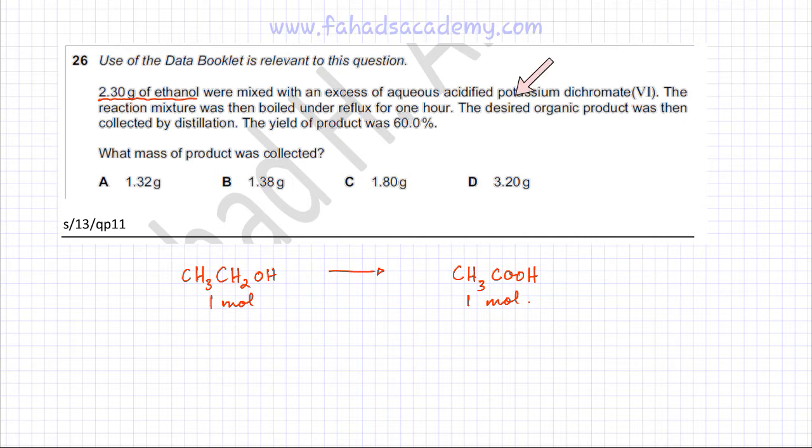Now, the desired organic product was then collected by distillation and the yield of the product was 60%. We're going to come to this part later. Starting with 2.3 grams of ethanol, I'm first going to figure out how many moles of ethanol I have.